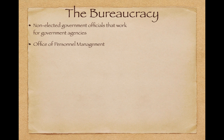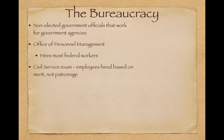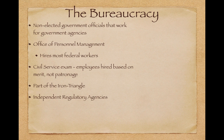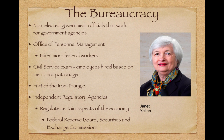The bureaucracy consists of non-elected government officials that work for government agencies. The Office of Personnel Management hires most federal workers. The civil service exam, instituted in the 1880s after President Garfield was assassinated, means employees are hired based on merit — what they know — not patronage or who they know. The bureaucracy is part of the iron triangle: remember the three parts — bureaucracy, interest groups, and Congress. Independent regulatory agencies regulate aspects of the economy, such as the Federal Reserve and the Securities and Exchange Commission (SEC).